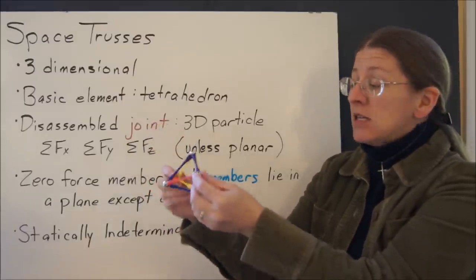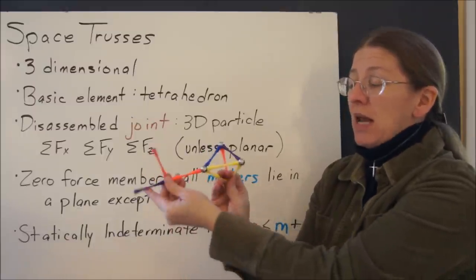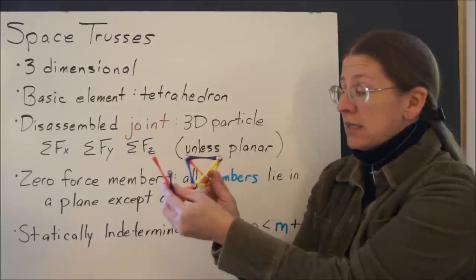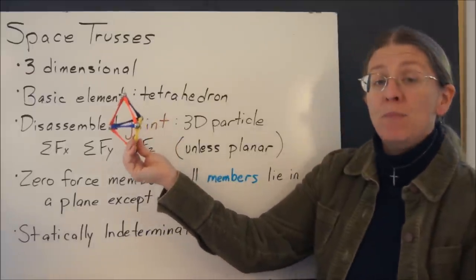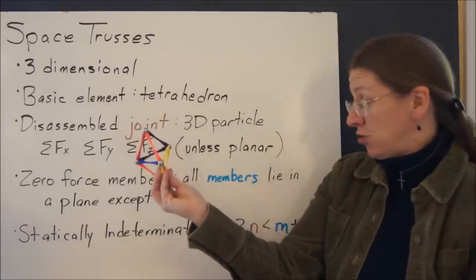That's called a simple truss. So if I take these three that I had a minute ago, just these three elements, these three members with one extra joint, and I put them on top of my tetrahedron that I had a minute ago, now I have a bigger truss. That's called a simple three-dimensional space truss.